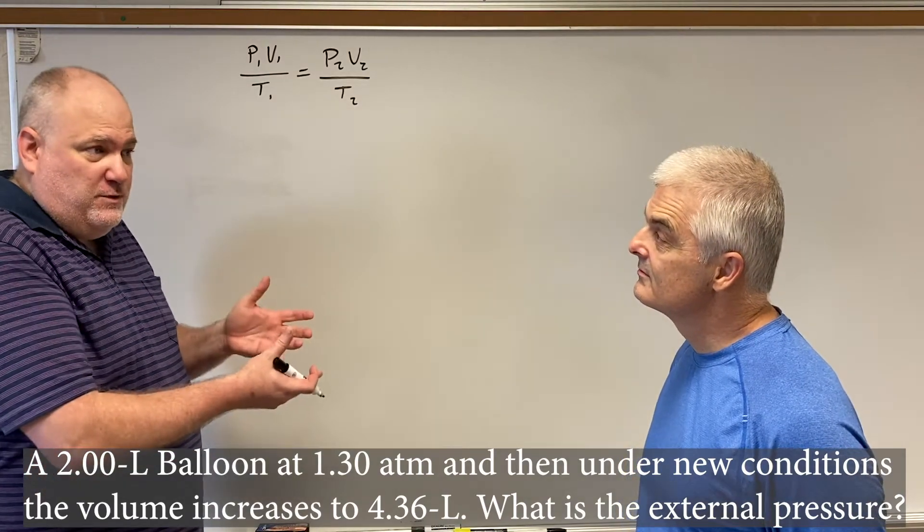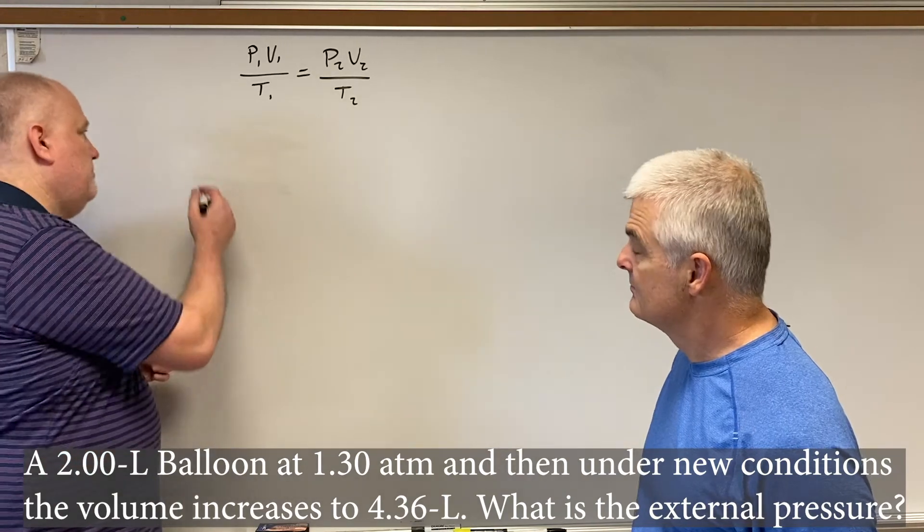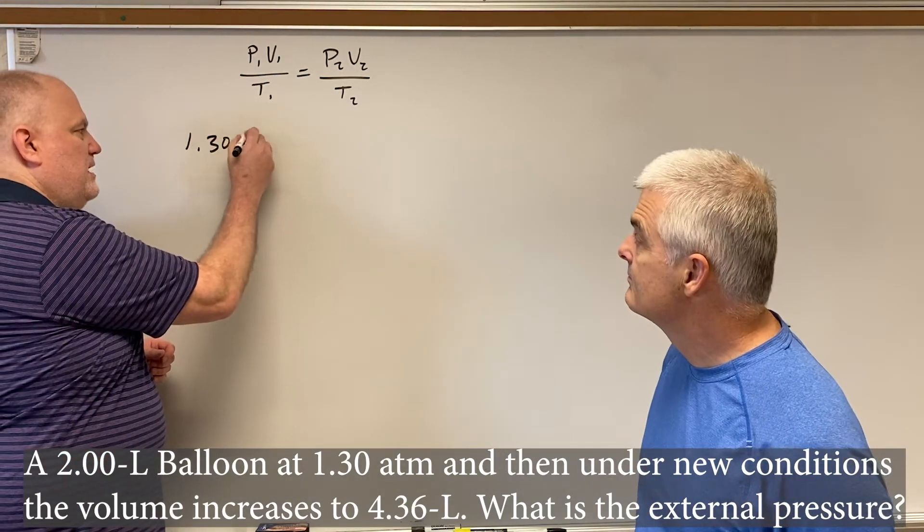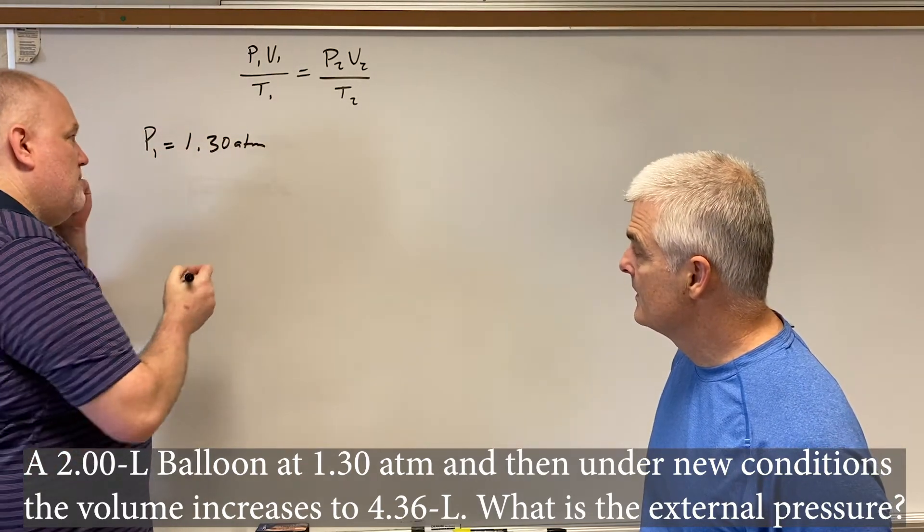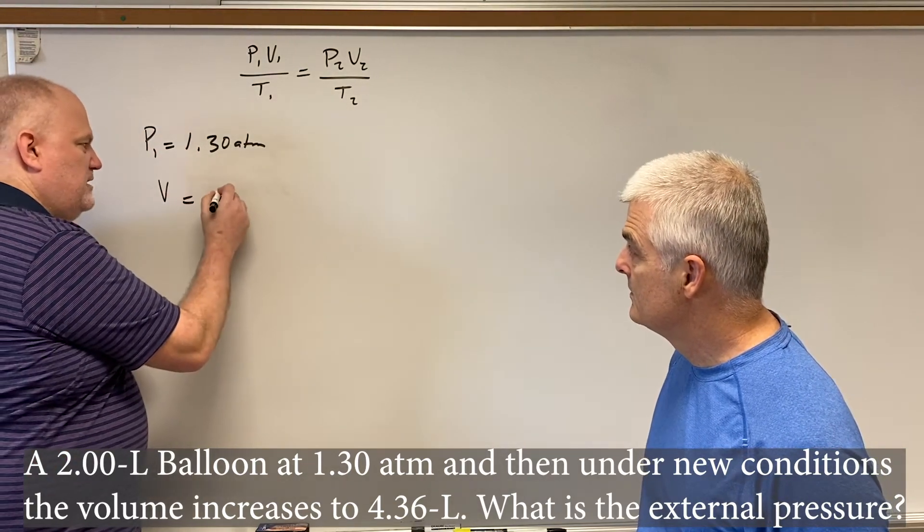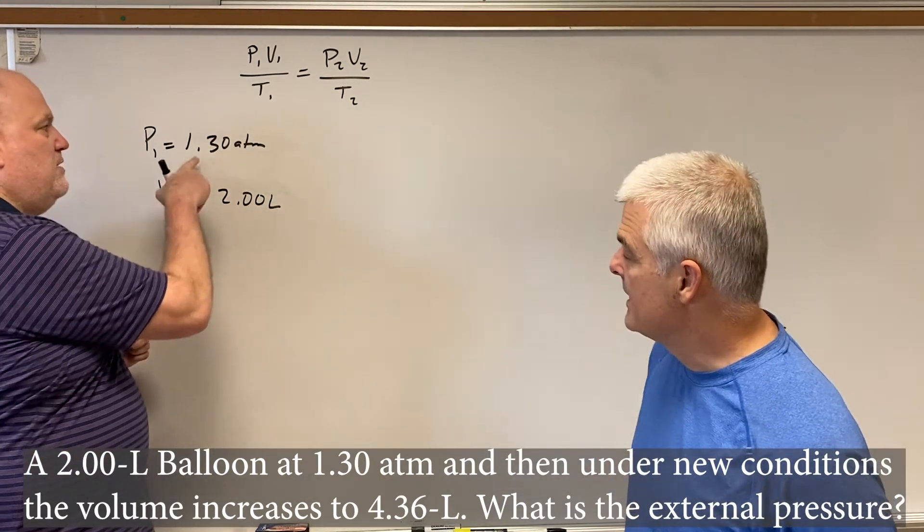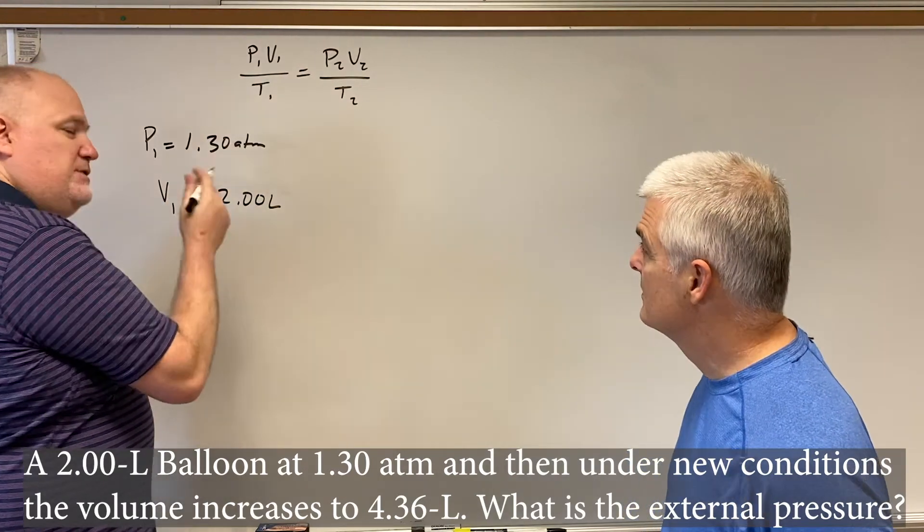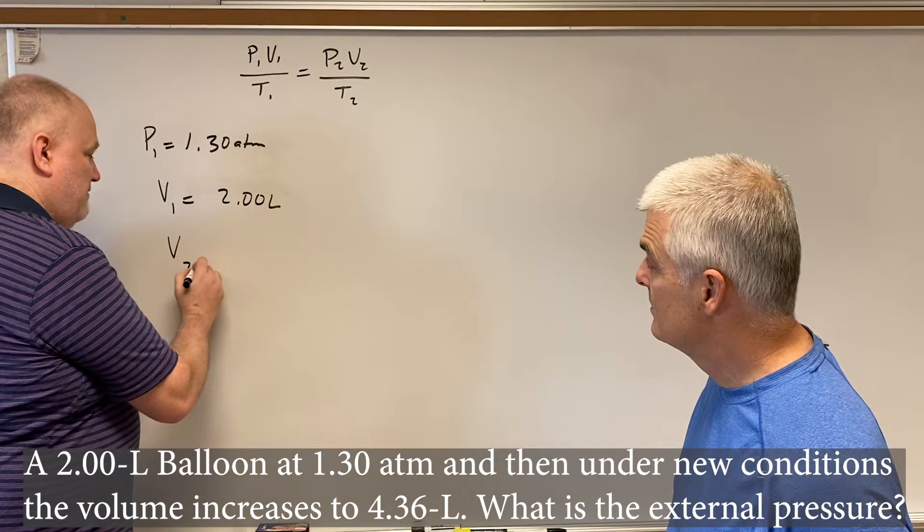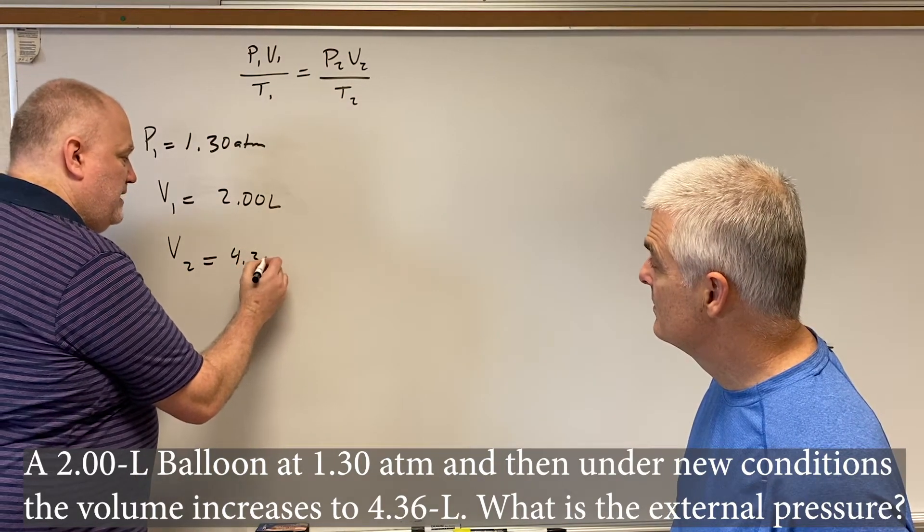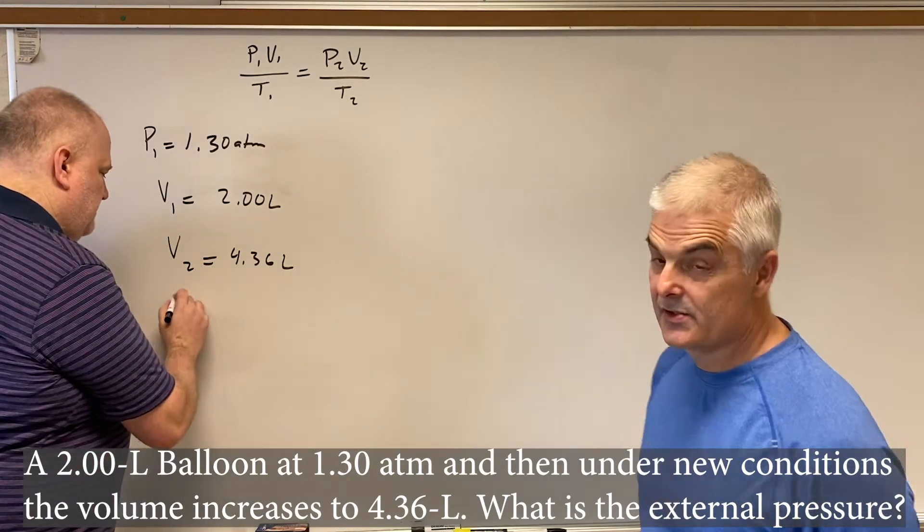And as a reminder, any time that you change variables, we use this equation. The problem tells us the pressure of the original balloon is 1.30 ATM, and I'm going to write P1 here, because that's the original pressure. The volume of our original balloon is a paltry 2.00 liters. It's a 2-liter balloon. I see that, yeah. 2-liter balloon. And now we're going to change the conditions. Now we're changing the conditions. If you take a look at the problem here, it says that the new volume, we'll call that V2, is now 4.36 liters. Got it. So the question, of course, is what is the new pressure?